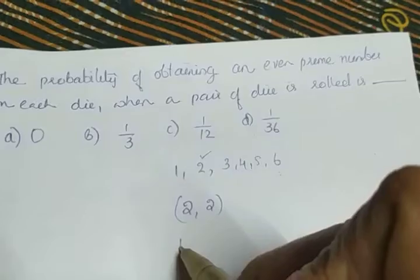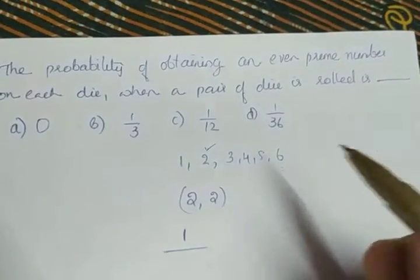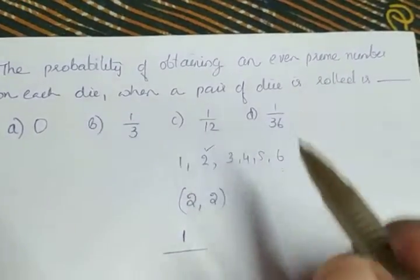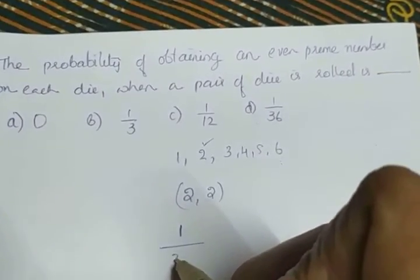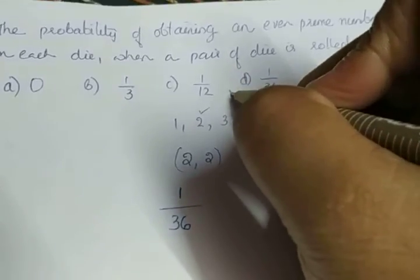So how many events are favorable? 1, divided by what's the total number of events in the experiment of tossing a die? There are 36 events, isn't it? So the probability will be 1/36 and the answer is option D.